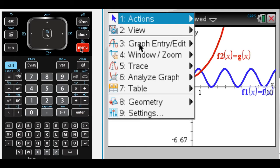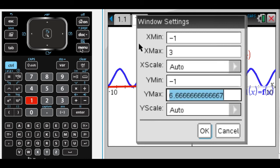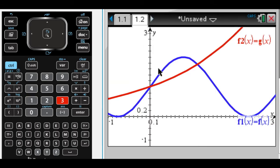I'm also going to change the window. So I'm going to make it look a little more like what they've given us here. So let's go from negative 1 to 3, and let's go from negative 1 to 3. Let's see what that looks like. That's not so bad.